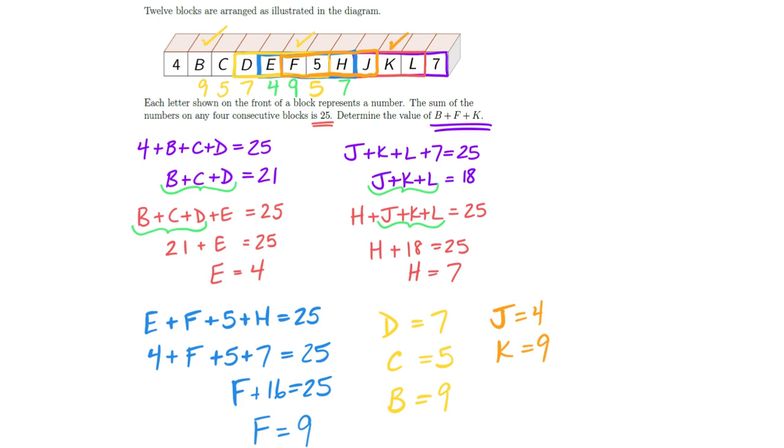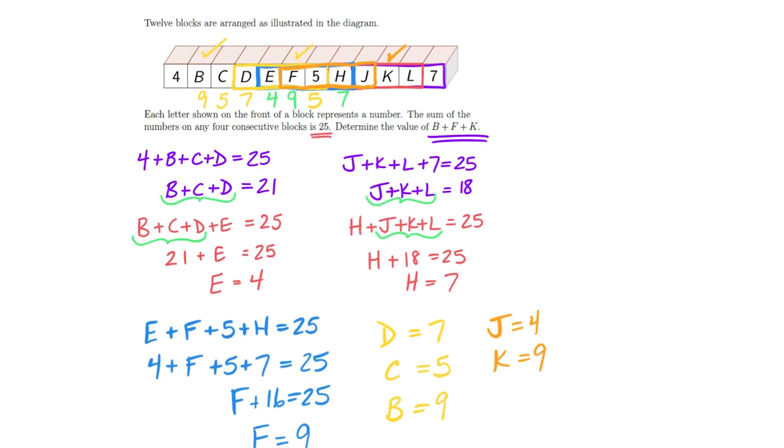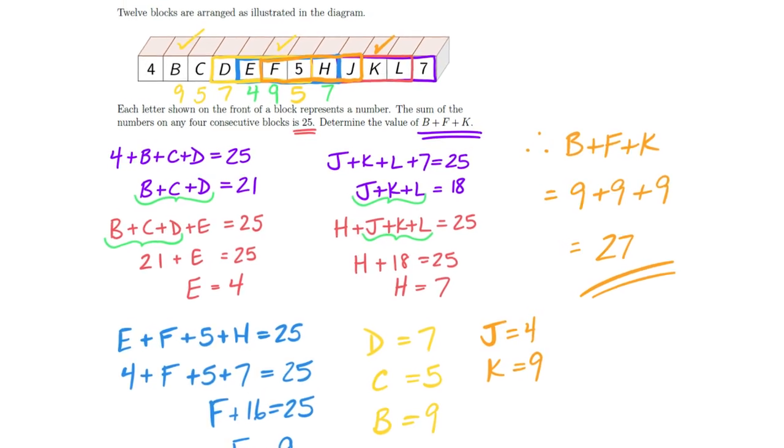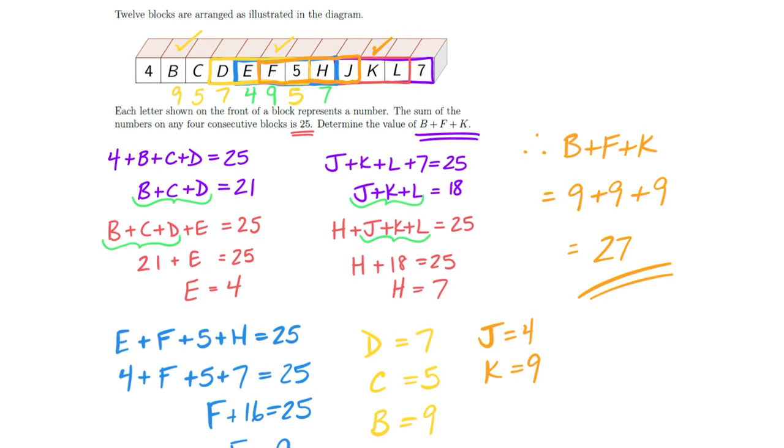Now that I know my K, I have everything I need. So, therefore, I know that my B plus my F plus my K has to equal, well, B was 9. F was 9. And K was 9. And therefore, I get 27. There we go. Nice. Okay. I'm hoping that that was a nice direct way for us to stumble our way through that problem. Okay. Keep up your problem solving. Best of luck. See you next week. Bye bye.